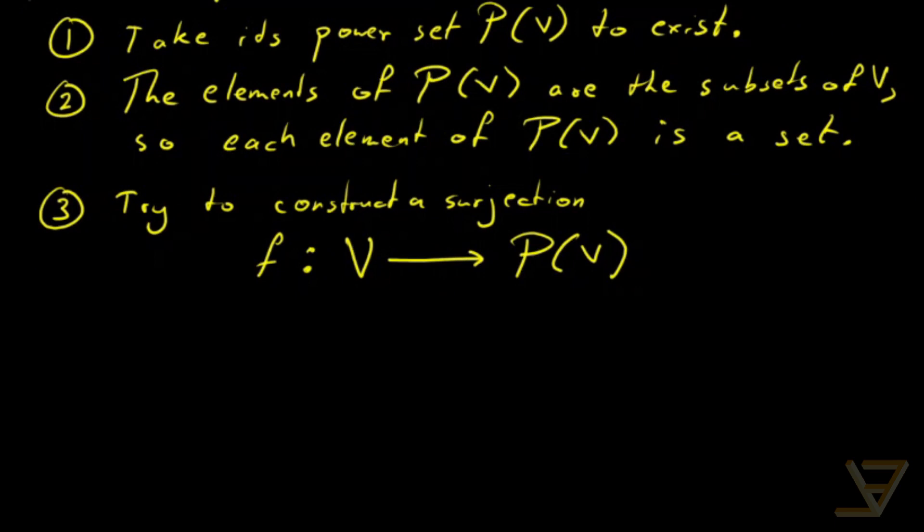What we're going to do is we're going to say f(x) is equal to either it's the identity function if x is an element of the power set of V, or we just map to the empty set if x is not an element of the power set of V.